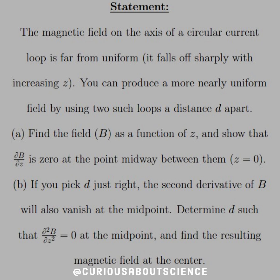And if you pick d just right, the second derivative of B will also vanish. So now we need to determine what d is such that the second derivative is equal to zero at the midpoint and find the resulting magnetic field at the center.